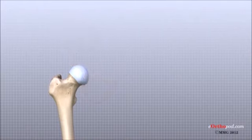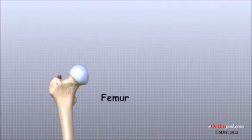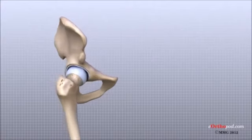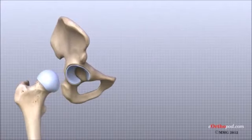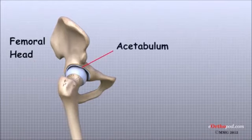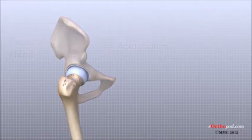The bones that form the hip are the femur or the thigh bone and the pelvis. The top end of the femur is shaped like a ball. This ball is called the femoral head. The femoral head fits into a round socket on the side of the pelvis. This socket is called the acetabulum.